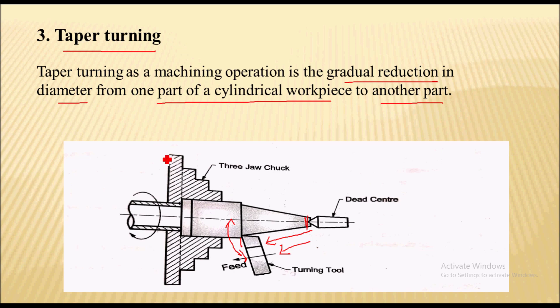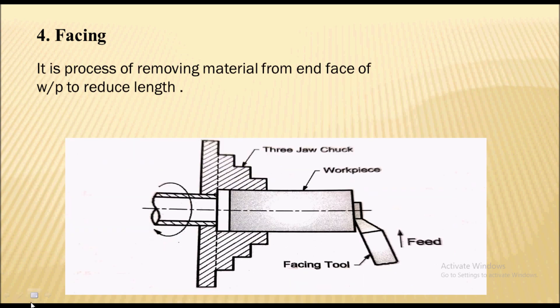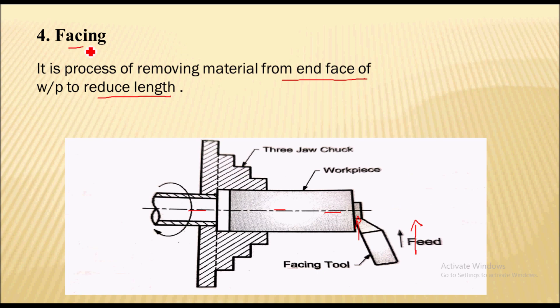The next operation is the facing operation. It is a process of removing material from the end face of the workpiece to reduce its length. The tool is fed perpendicular to the axis of the workpiece, and material is removed from the end face to produce a flat surface. A facing tool is used for this operation, and it is performed to reduce the length of the workpiece.